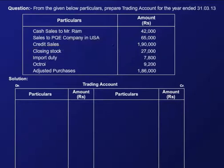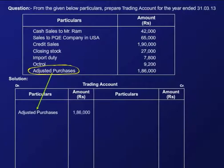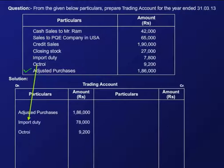Now, simply show adjusted purchases here on the debit side like this. Next, we transfer both these direct expenses to the debit side of the account.